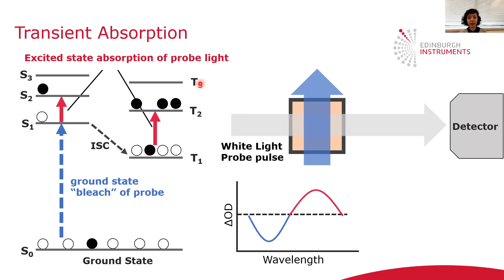The transient absorption spectrum measures delta OD, which is the difference in absorption between the excited state and the ground state. Absorption from the excited state results in a positive component in the delta OD spectrum. There are also negative components like this one, which come from what we call the ground state bleach.